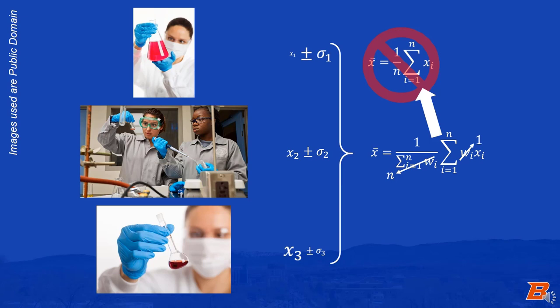The most common way to do this is to assign the weights to be the reciprocal of the variance, remembering that the variance is the square of the standard error. Plugging that in, we have a relatively straightforward expression for this weighted average.